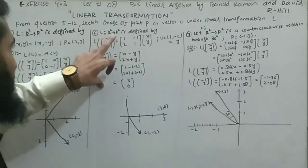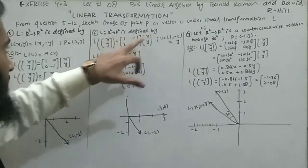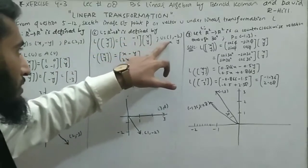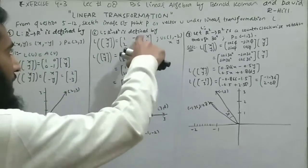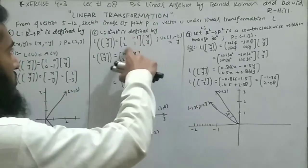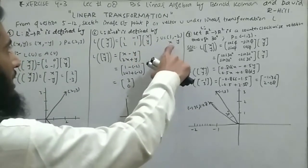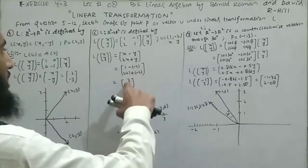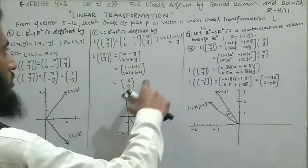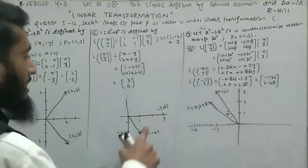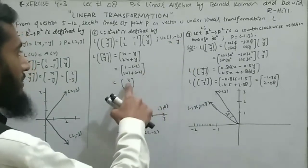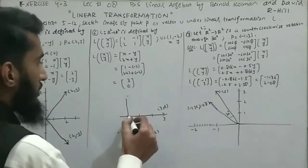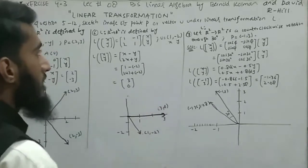Question 6: L from R² to R² defined by L(x, y) = [[1,-1],[2,1]] · (x, y), while u = (1, -2). By multiplying, this gives (x-y, 2x+y). Substituting x=1, y=-2 gives (3, 0). The given image point (1, -2) maps to the required image (3, 0), which lies on the positive x-axis.